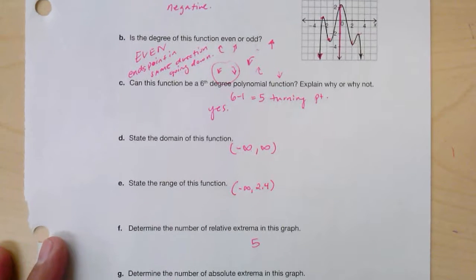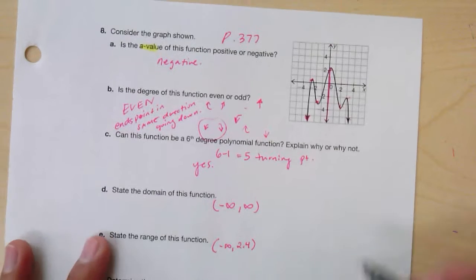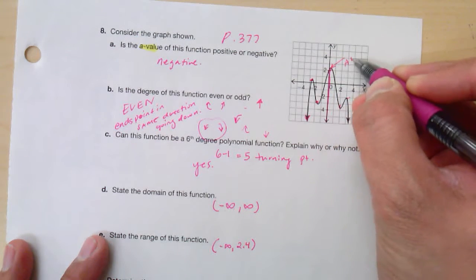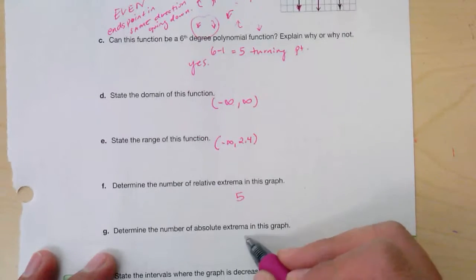Determine the number of absolute extrema in this graph. When I look at the graph, this is the absolute maximum, so there's actually one absolute maximum.